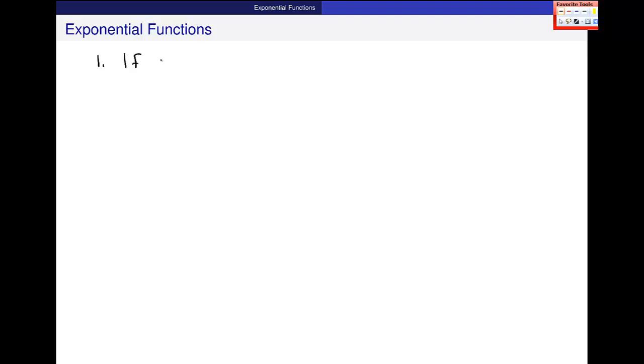So if f of x is e to the x, the derivative of that, f prime of x, is also e to the x. Yeah, I know, it's its own derivative.